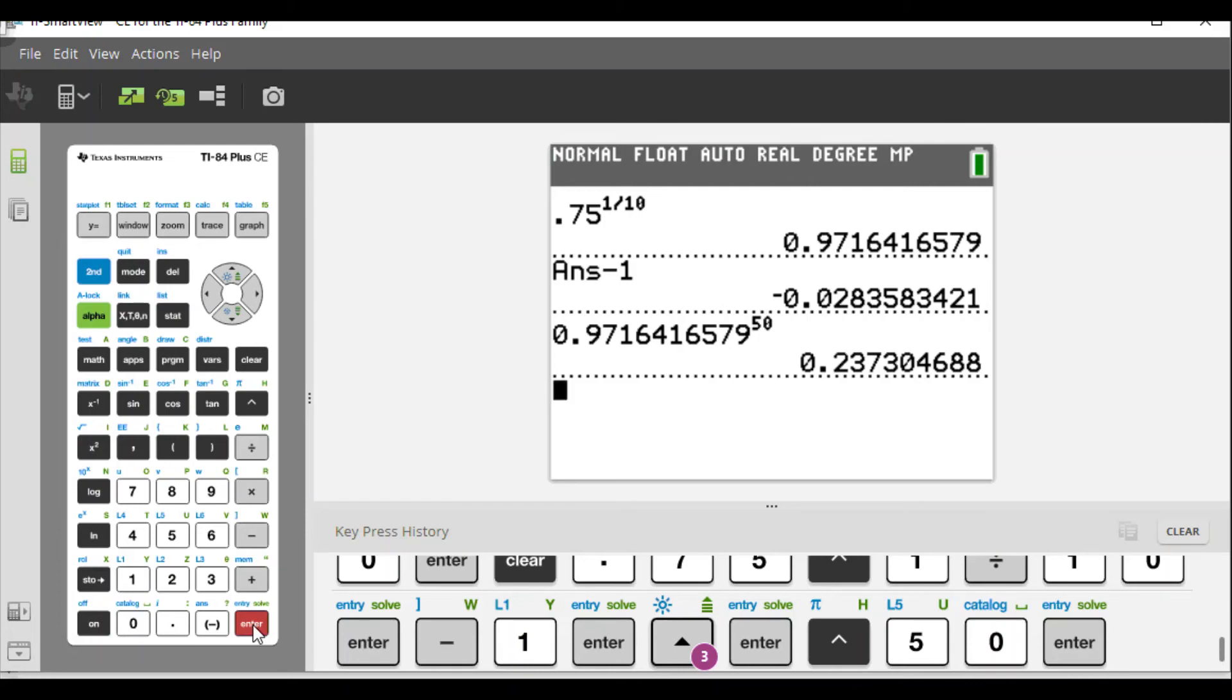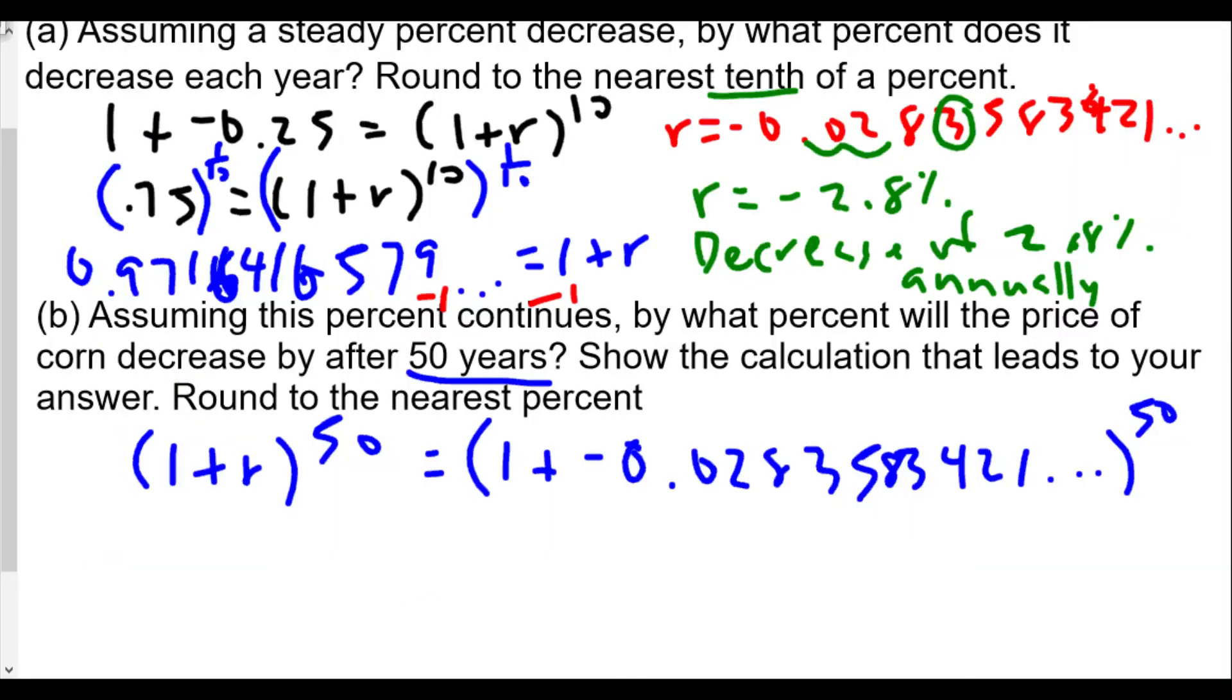0.237304688, and this would be - so in this case our total value, actually 1 plus k, is equal to 0.237304688. The idea is that k is going to be the change over time.